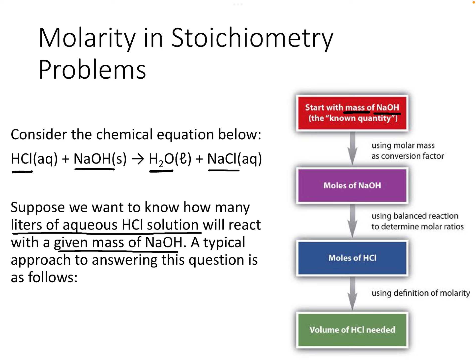The typical approach: start with the mass of NaOH, convert to moles of NaOH, then convert to moles of HCl using stoichiometric ratios. Instead of converting moles of HCl to grams like we've done before, this time we convert to a volume — because we're dealing with a solution. We divide by the molarity to get liters.